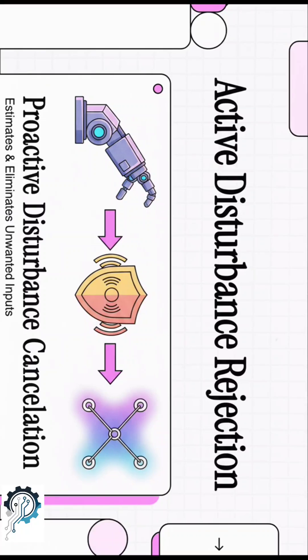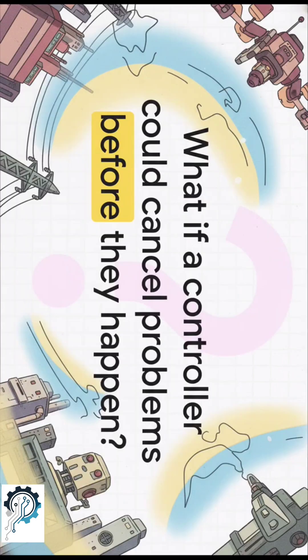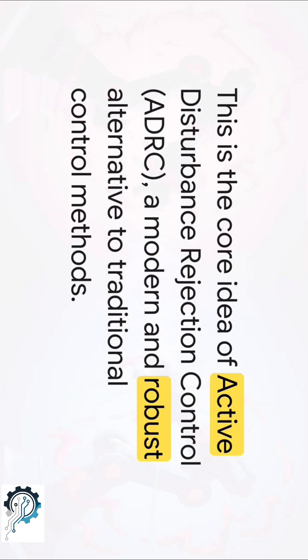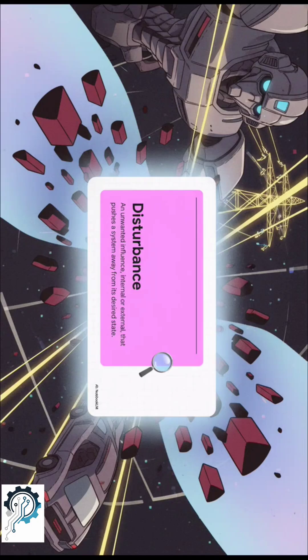Let's talk about taming chaos in everything from huge power plants to tiny robots. What if a controller could actually stop problems before they even happen? That's the whole idea behind Active Disturbance Rejection Control, or ADRC for short. A disturbance can be anything — a gust of wind, a sudden power surge, you name it.